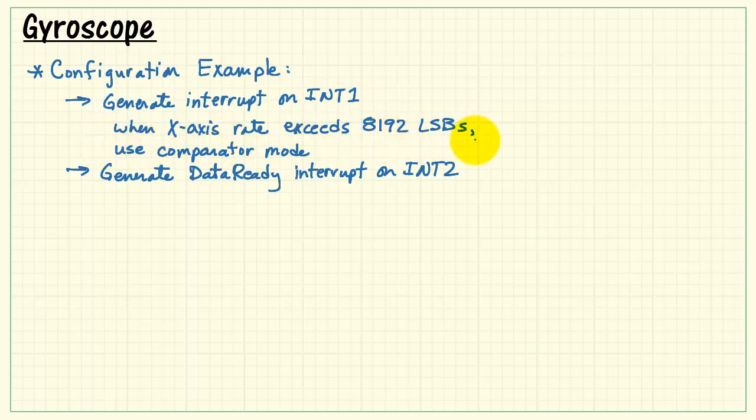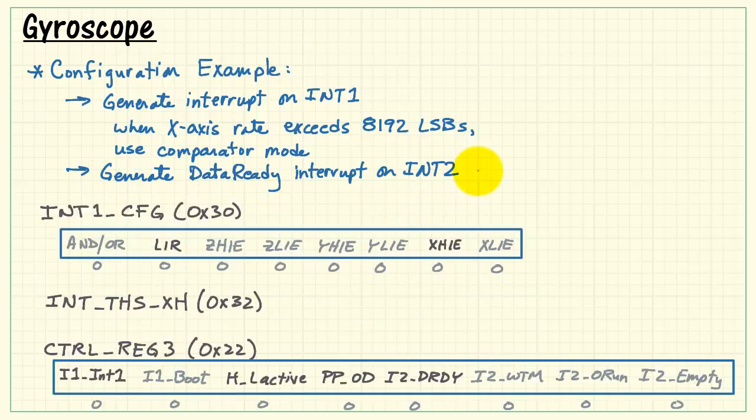Let's set up the interrupts. We have both interrupt 1 and interrupt number 2. We need to configure three different registers. Interrupt 1 configuration at hexadecimal 30, interrupt threshold on the x-axis, and then control reg number 3.